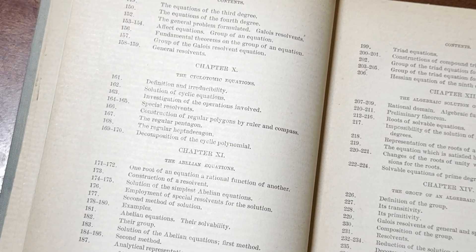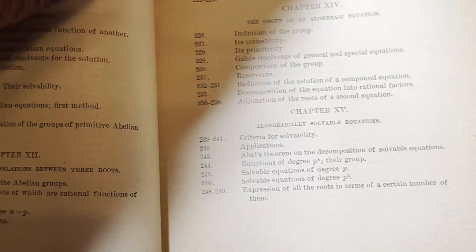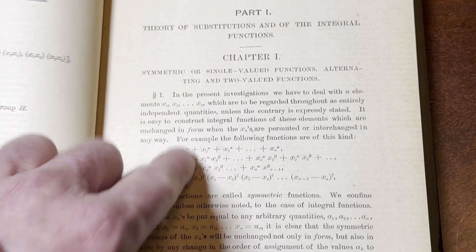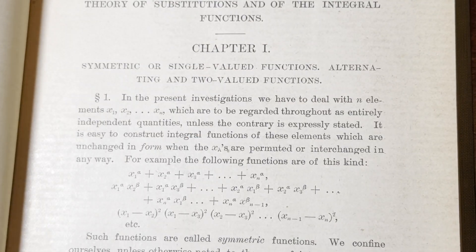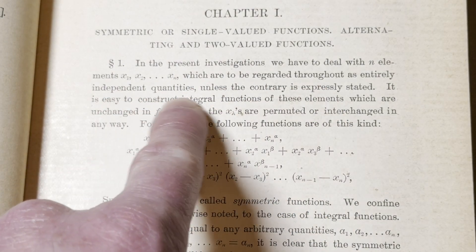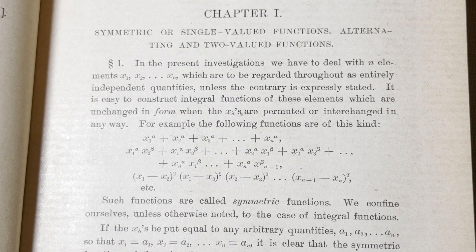There are some more topics here — the algebraic solution of equations, the group of an algebraic equation — and some errata. Then part one. Look how hardcore this is. It starts right away: 'In the present investigations, we have to deal with n elements, x sub 1 through x sub n, which are to be regarded throughout as entirely independent quantities unless the contrary is expressly stated.' And then it goes on and on. So you can see it's pretty hardcore — definitely not for beginners.